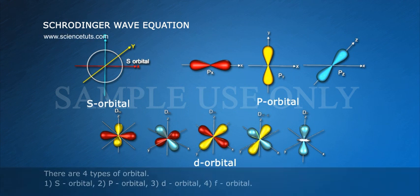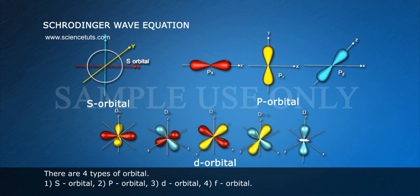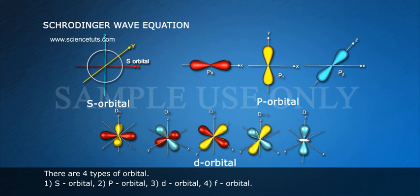There are four types of orbital: 1. S orbital, 2. P orbital, 3. D orbital, 4. F orbital.